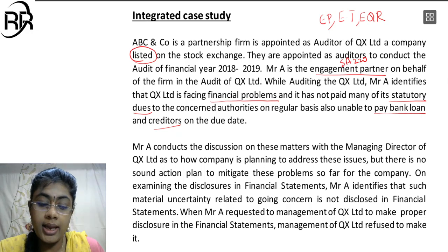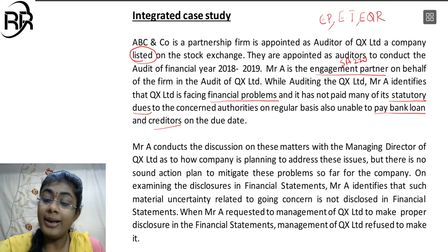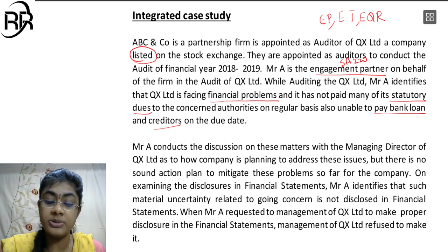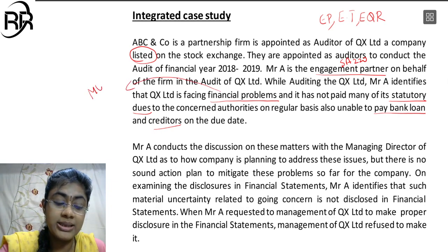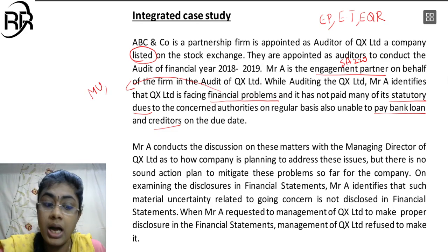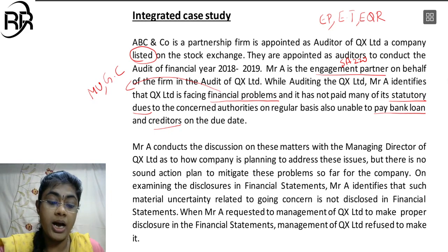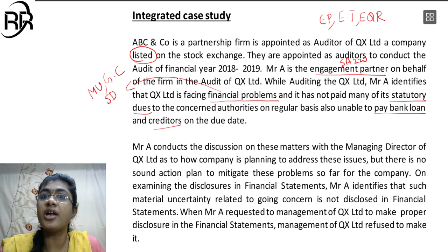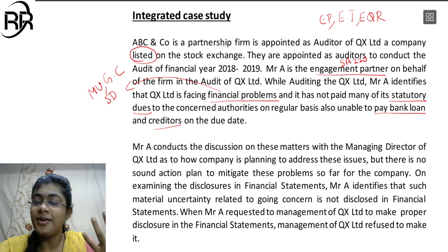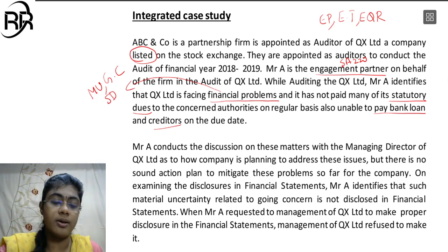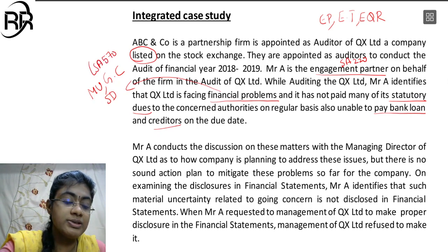A is the engagement partner. While auditing the company, A identifies financial problems - lots of financial problems. This means we can conclude that there is a material uncertainty on going concern that may cast significant doubt to the auditor. Material uncertainty, significant doubt, going concern - as per SA-570.